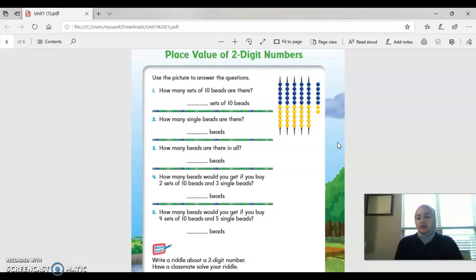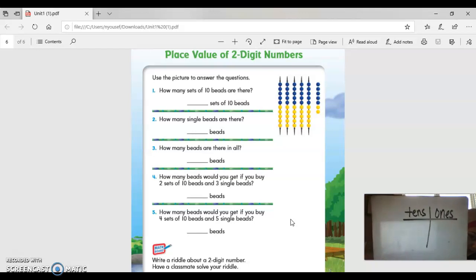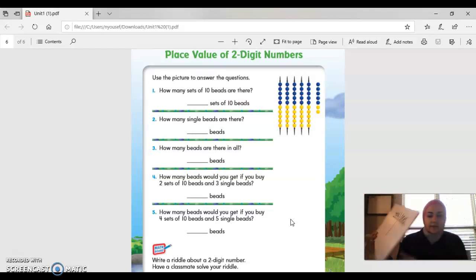Today we are learning about place value of two-digit numbers. In our place value system, there's a ones place and a tens place. You probably already know the hundreds place too. On your paper, I want you to draw your chart with ones and tens. We're just doing ones and tens right now. Draw the ones place first, then tens. Now let's read what it says.